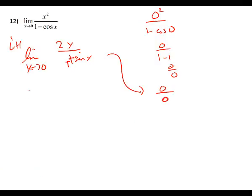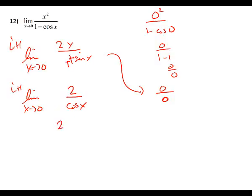What's the derivative of 2x? Two. And the derivative of sine is cosine x. We're going to put zero in: two over cosine of zero. What's cosine of zero? One. So your answer is two.